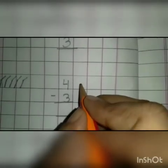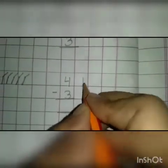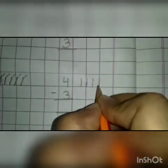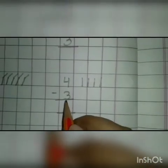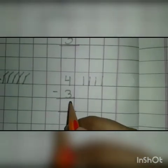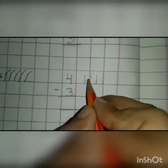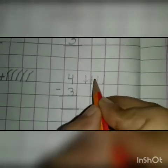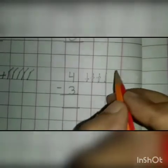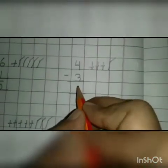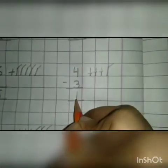Let's go to the next sum. And this is number 4. Now you will draw 4 lines here: 1, 2, 3, 4. And this is number 3. Now you take away 3 lines from these lines: 1, 2, 3. How many lines are left? 1. Now we will write 1 here.